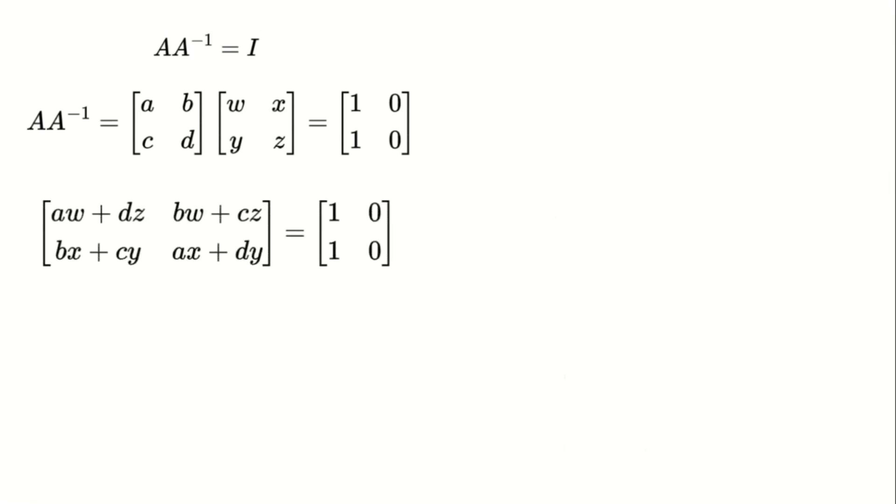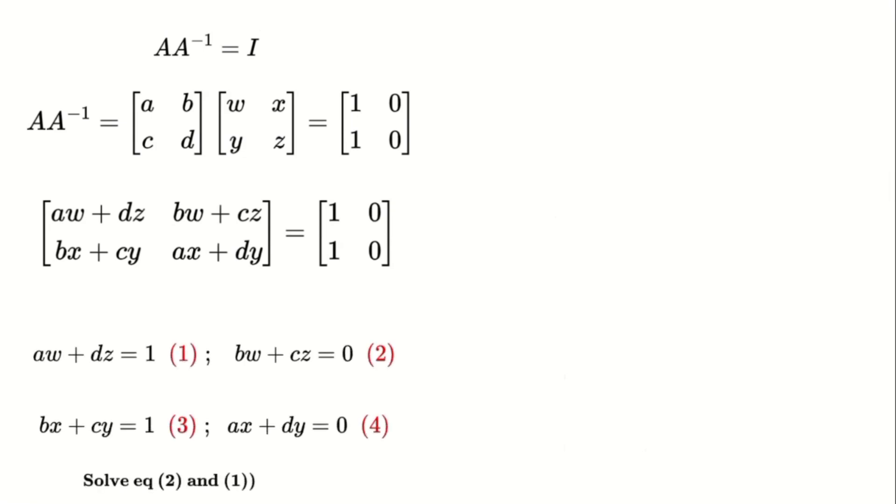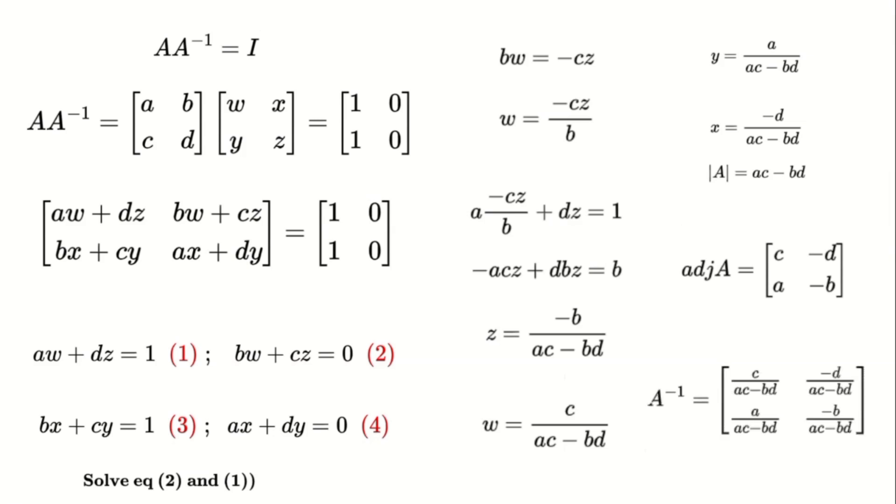By multiplying A with its inverse and comparing the result to the identity matrix, we derive a set of four equations. Solving these equations step-by-step provides the values of W, X, Y, and Z. Substituting these values back into the inverse matrix gives us the desired inverse.